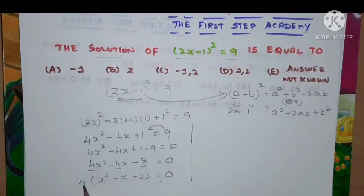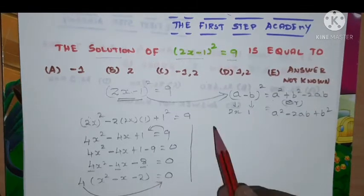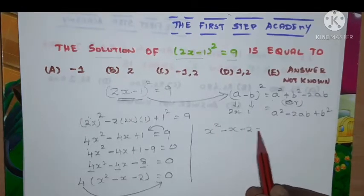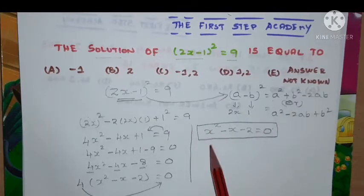When this 4 comes to the right hand side it becomes 0. Hence the equation we can write as x² - x - 2 = 0. So now we got a polynomial, now what we need to do is we need to factorize this.